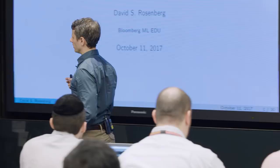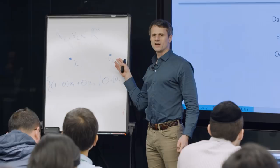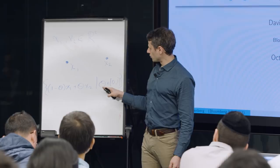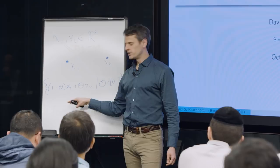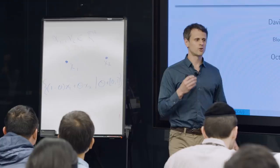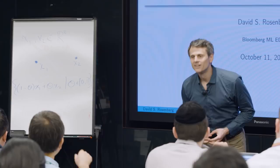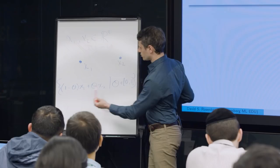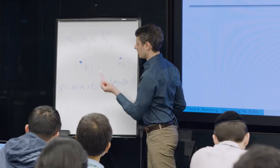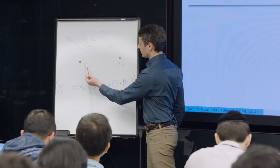I drew two vectors x1 and x2 in R2, and I drew a set. I have this new parameter theta which ranges between 0 and 1. And I'm taking what's called a convex combination: 1 minus theta times x1 plus theta times x2. The question is, what is this set geometrically? It's the line segment connecting x1 and x2. When theta is 0 we get x1, and when theta is 1 we get x2. As theta varies between 0 and 1 we get different combinations.